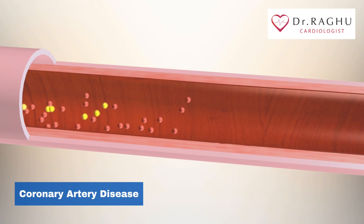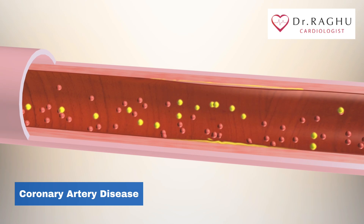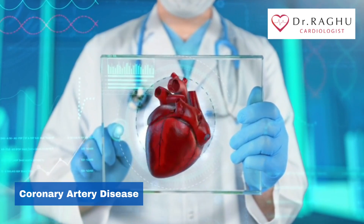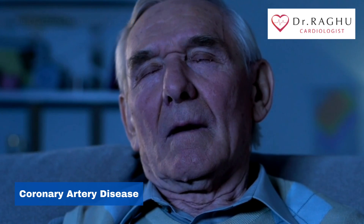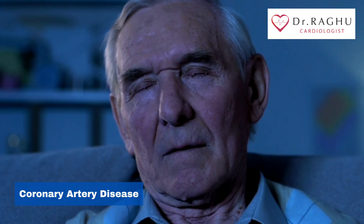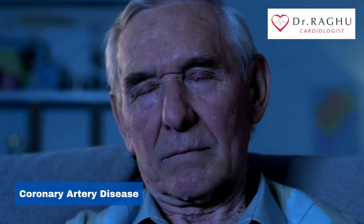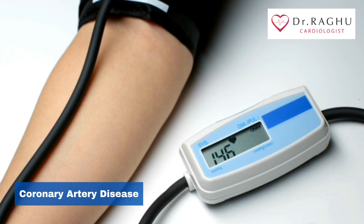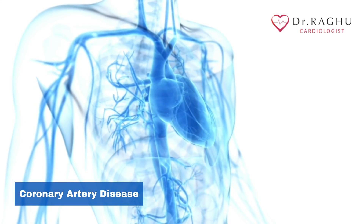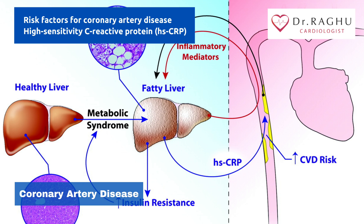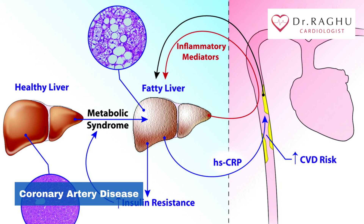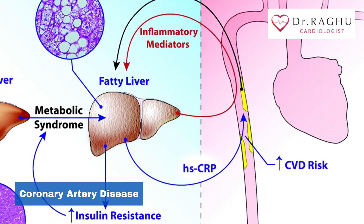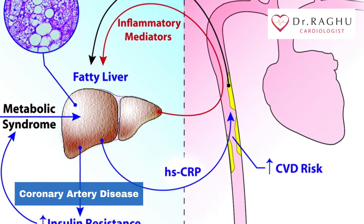Sometimes coronary artery disease develops without any classic risk factors. Researchers are studying other possible risk factors including sleep apnea, a disorder that causes you to repeatedly stop and start breathing while sleeping. Sudden drops in blood oxygen levels during sleep apnea increase blood pressure and strain the cardiovascular system. High-sensitivity C-reactive protein (CRP) appears in higher than normal amounts when there's inflammation somewhere in your body; as coronary arteries narrow, you'll have more CRP in your blood.